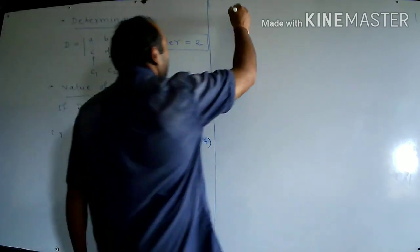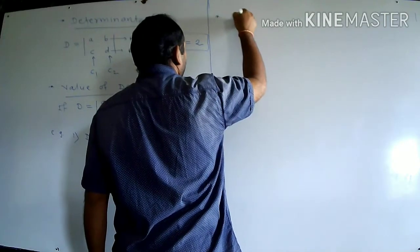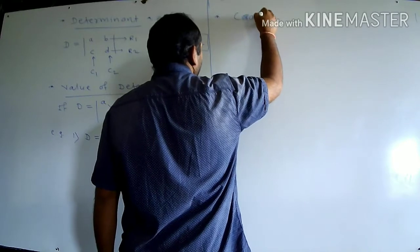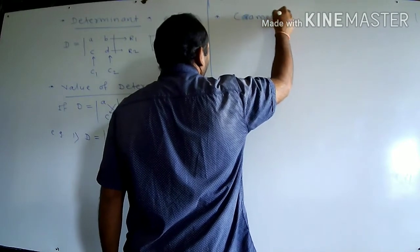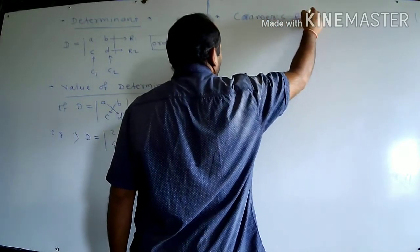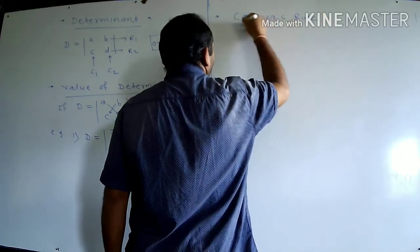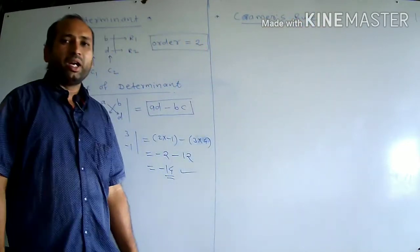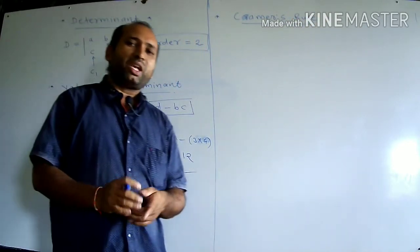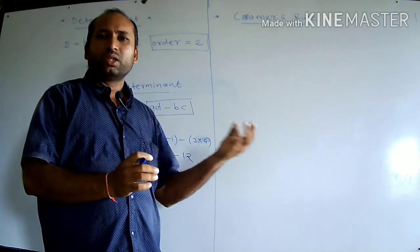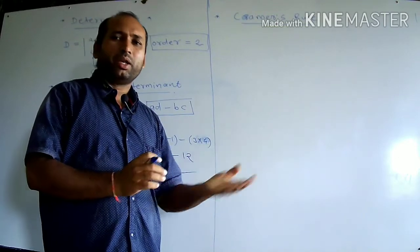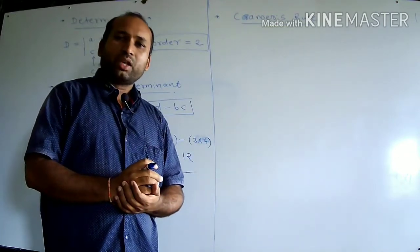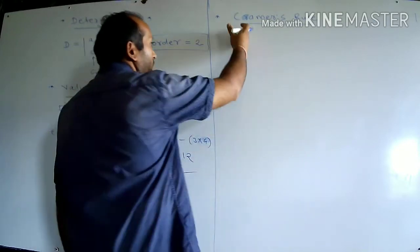The next point is Cramer's Rule. Using this rule, we can find the solution of simultaneous equations. This is the third method to solve given simultaneous equations.